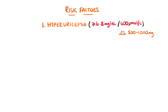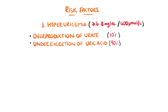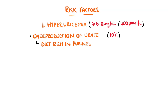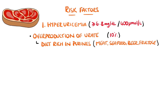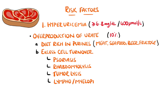The causes of hyperuricemia are generally divided into urate overproduction or decreased uric acid secretion. Factors increasing production include eating food rich in purines like meat, seafood, beer, and fructose-containing beverages, and conditions with high cell breakdown or turnover — examples being psoriasis, rhabdomyolysis, tumolysis, and even lympho- or myeloproliferative diseases.